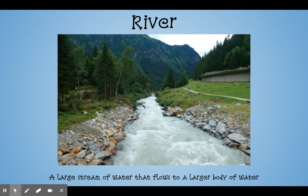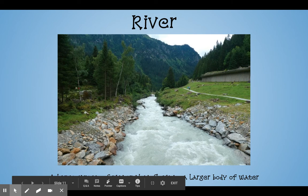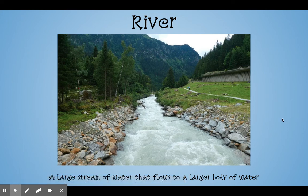River. A large stream of water that flows to a larger body of water. Usually you can see both sides of a river — one side and the other — but you see it continuing flowing forward. It's flowing water and it usually has two sides. Eventually this will go out to a large body of water, like an ocean or maybe a lake. The water is usually flowing in a river — see how you can see it moving.